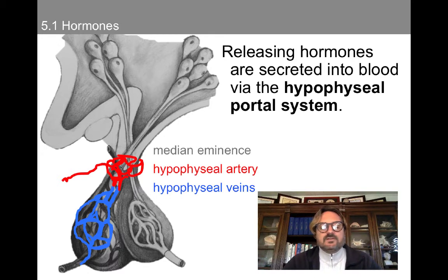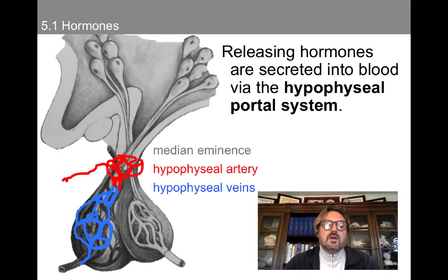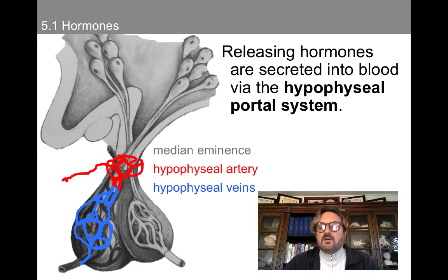Sometimes you'll hear these described as circumventricular organs — areas where the blood-brain barrier is not that pronounced. This was noticed when it was observed that if you inject dye into the body of an animal, their whole body will change colors inside — except the brain. The blood-brain barrier has a really tight layer of endothelial cells that prevents many foreign substances from passing in. There are certain areas, like the area postrema down by the cerebellum, where we have a weaker blood-brain barrier that permits this transfer, and the hypophyseal portal system is actually one of those.